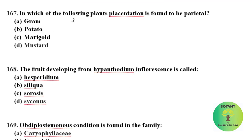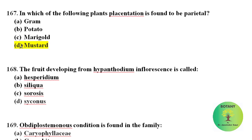In which of the following plants is placentation found to be parietal? Parietal placentation occurs in Papaveraceae and Brassicaceae. Among these, mustard is present, which is a member of family Brassicaceae. So parietal placentation will be found in mustard.